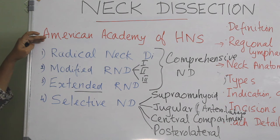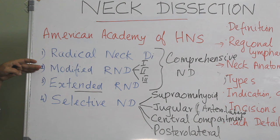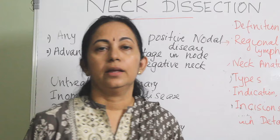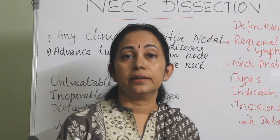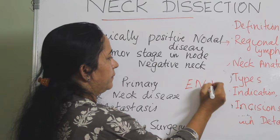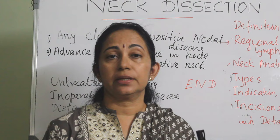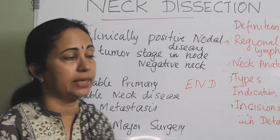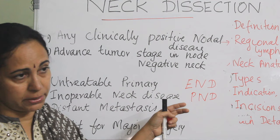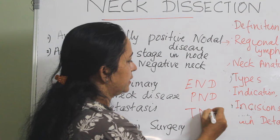According to the American Academy of Head and Neck Surgery: radical neck dissection, modified radical divided into type 1, type 2, and type 3, extended radical neck dissection, and selective neck dissection divided into four types — these are the types of neck dissection. There are also two terms: elective neck dissection, in which we perform neck dissection in a clinically negative node — also called prophylactic neck dissection — and therapeutic neck dissection, which we do for a clinically positive node.